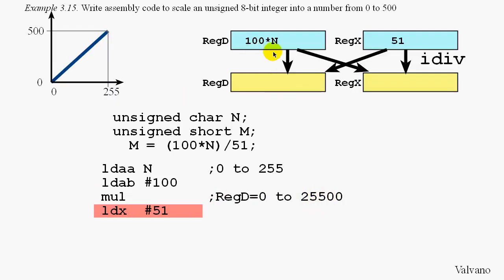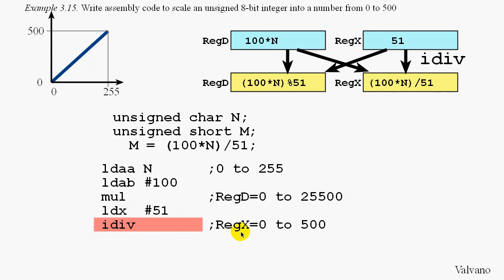The next step in the program is to set up to use the integer division. The integer division instruction will take register d and divide it by register x. So the next step of our program is to bring the constant 51 into register x. After the idiv instruction, register x will contain the quotient of 100 times n divided by 51. This will be in register x and we see that this value could be any number from 0 to 500. Again, this fits into a 16-bit register and so no overflow could occur.